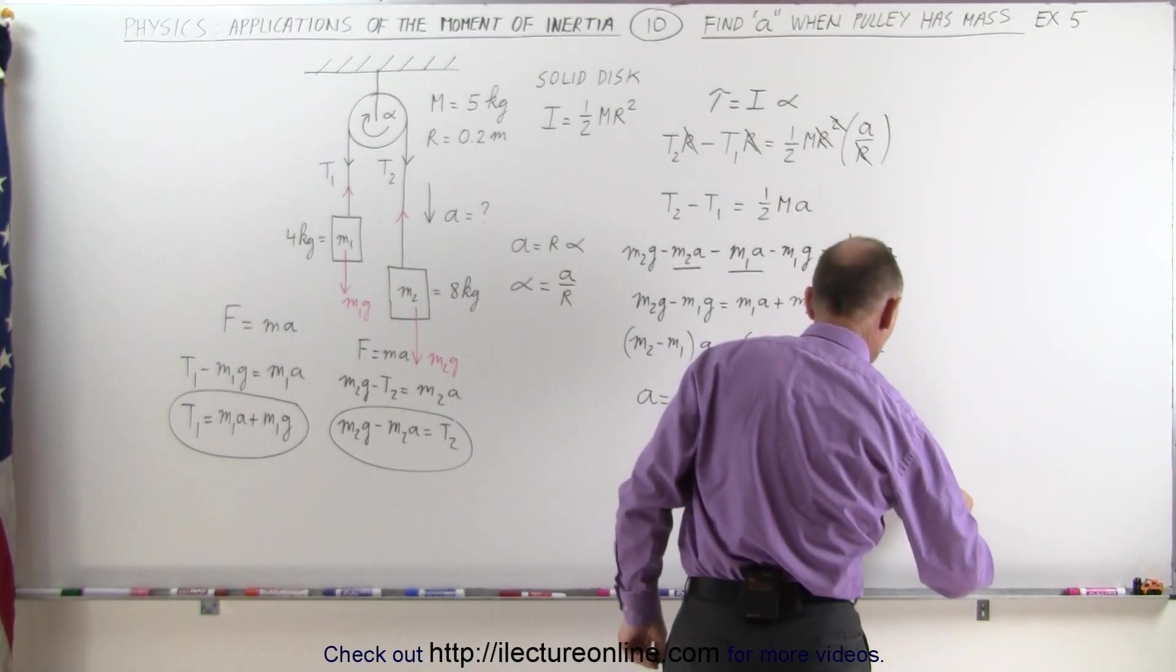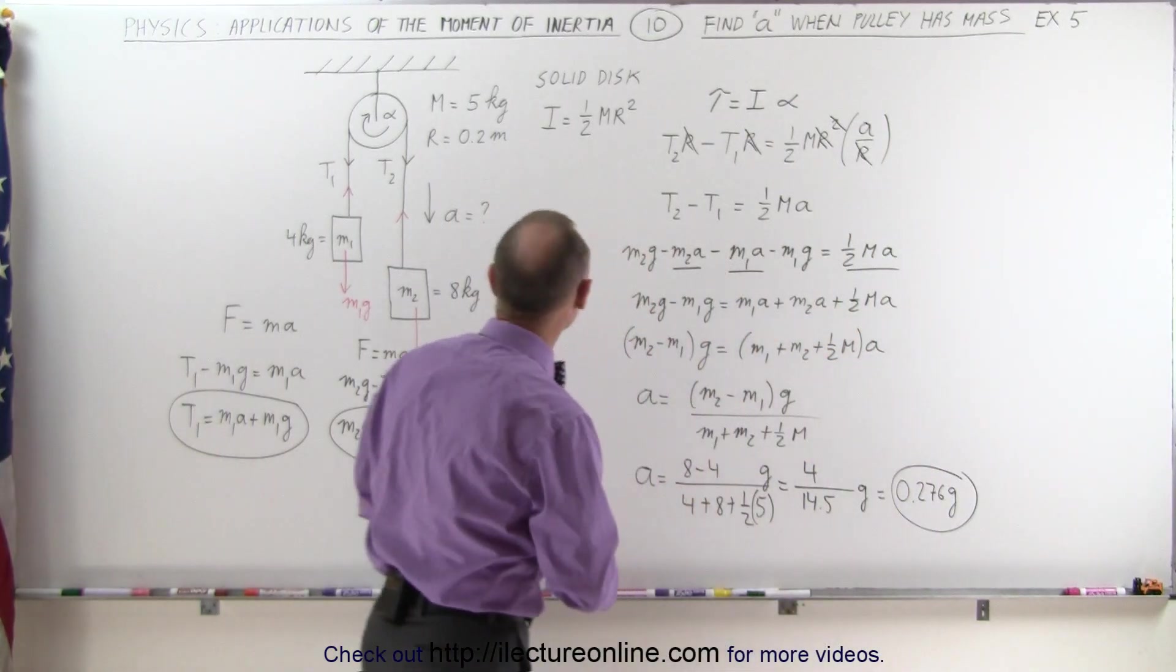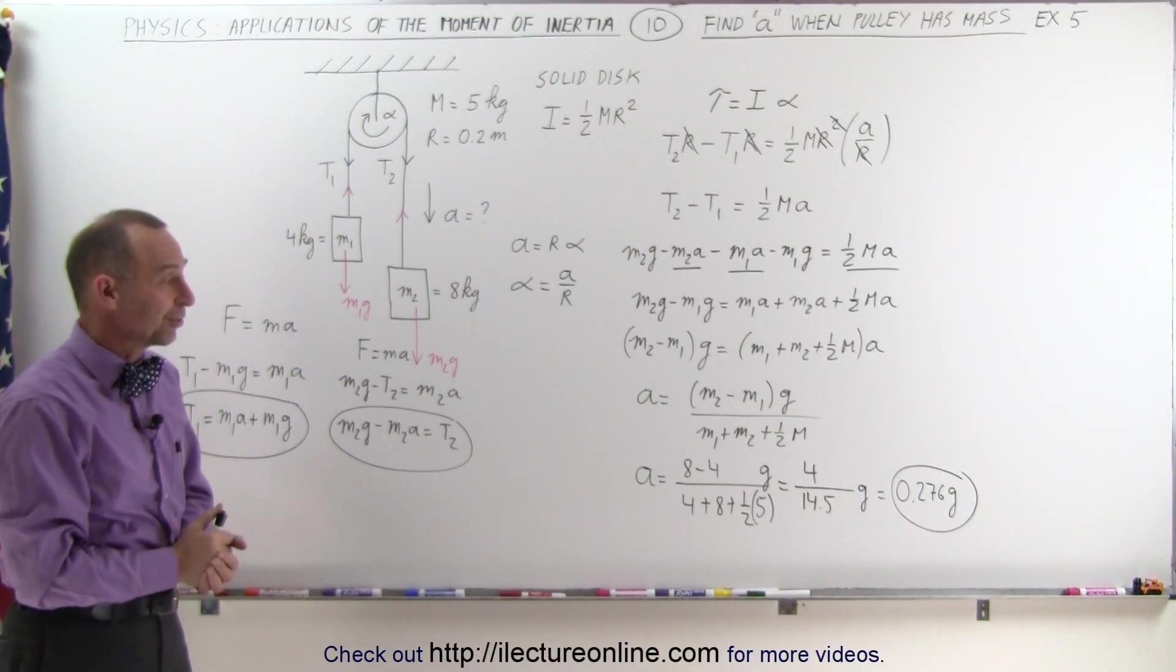0.276 times G, and that would be the acceleration of the system, taking into account that there's a pulley that has mass. And that's how we do a problem like this.